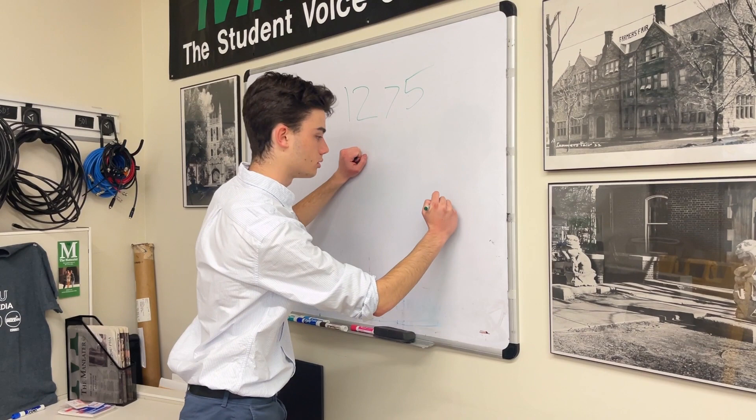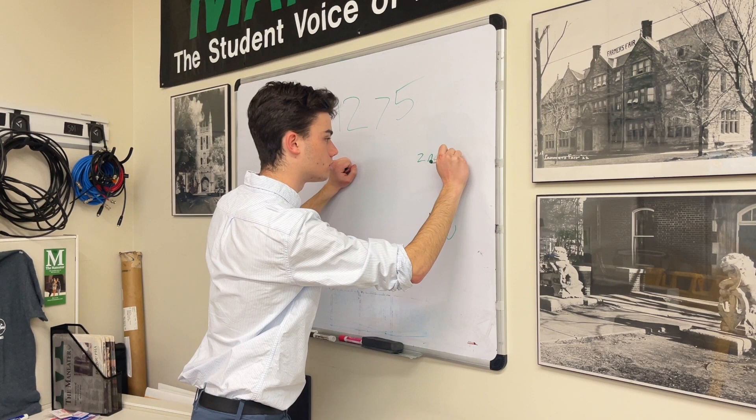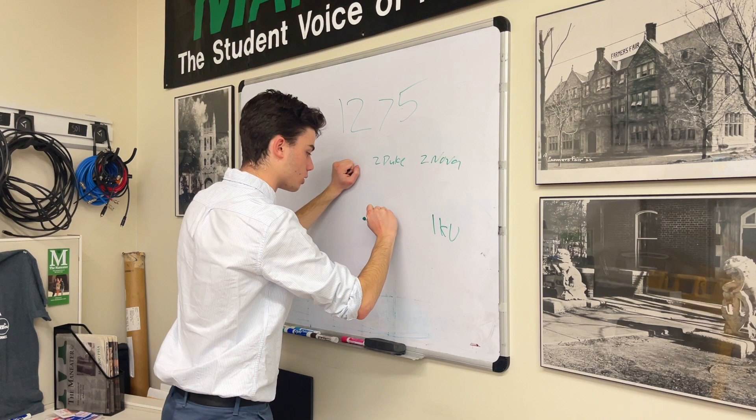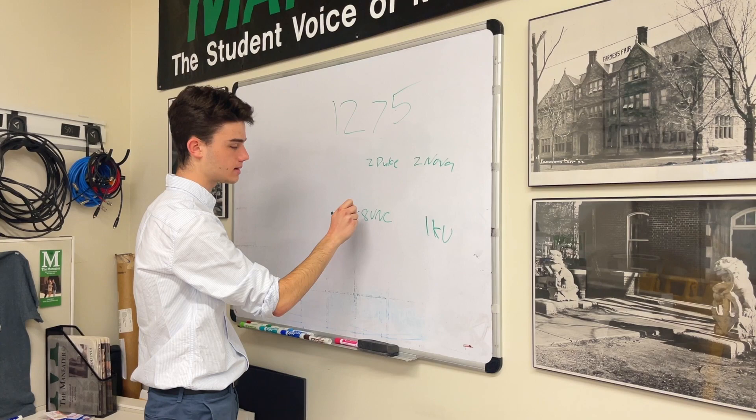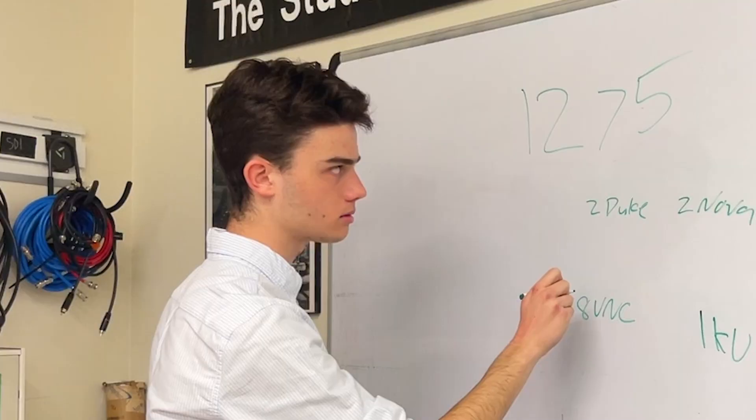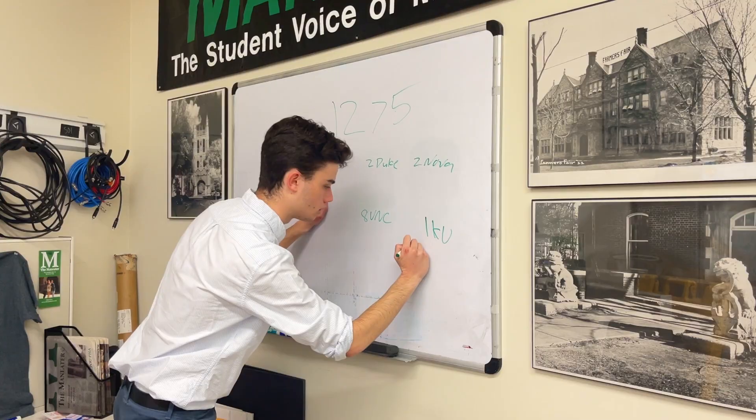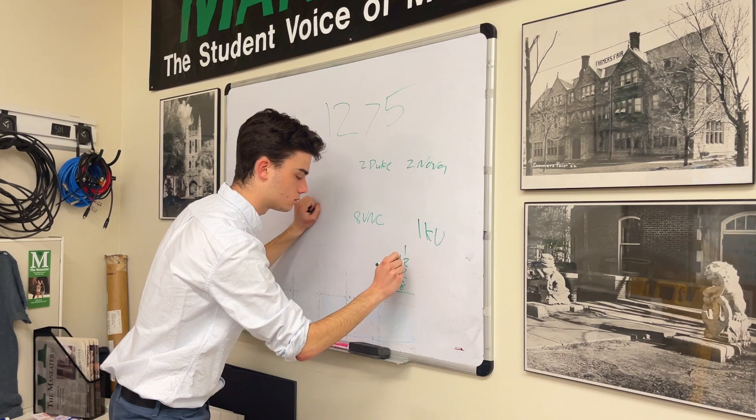For example, last year we had one-seeded Kansas, two-seeded Villanova, two-seeded Duke, and eight-seeded North Carolina. One plus two plus two plus eight is 13. The combined seeds of the Final Four teams last year was 13.